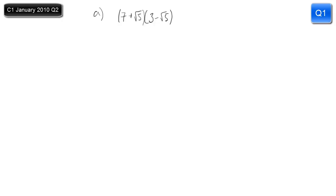Alright, now part A we're going to expand and simplify these brackets. Starting with the expand part, we simply have to make sure that every term in the first bracket is multiplied once by each term in the second bracket. I like to do this by doing little arrows across.